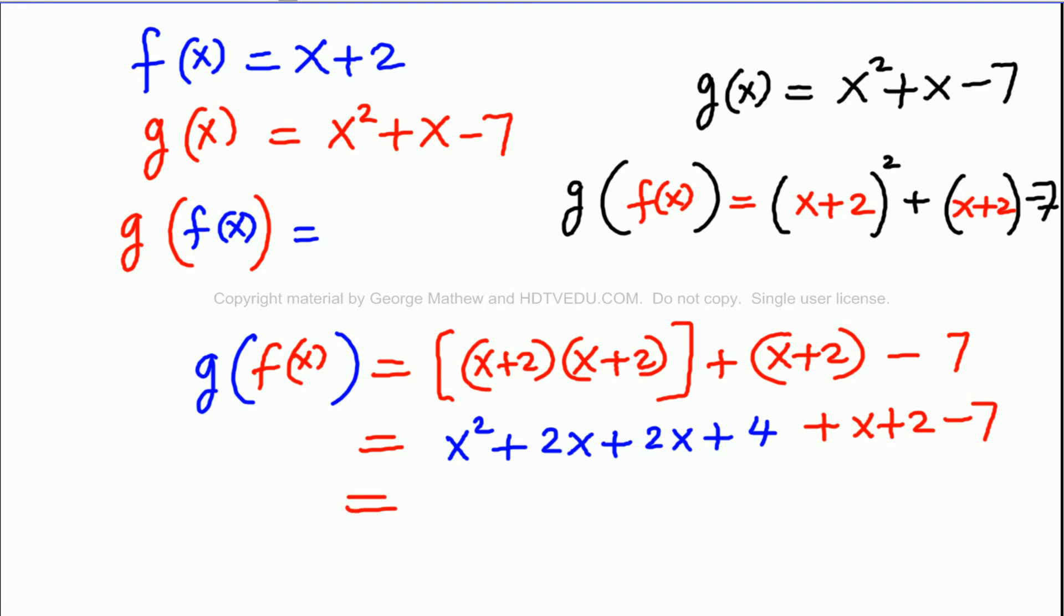So, this is as good as x to the power of 2 for sure. And then we have 2x, 2x and x. 2x plus 2x is 4x. 4x plus x is 5x. So, we have 5x. And then we have 4 plus 2 and negative 7. 4 plus 2 is 6. 6 minus 7 and that is negative 1.